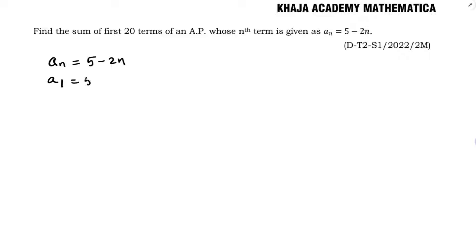First we will find A1. 5 minus in place of N just write 1. You will get first term. 5 minus 2 which is 3. This is A1.